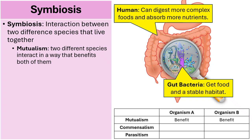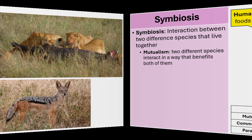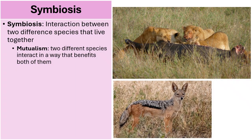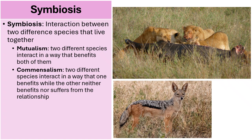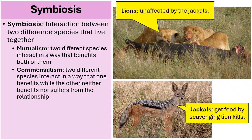Let's move on to commensalism. In commensalism, two different species interact in a way that one benefits while the other neither benefits nor suffers. A good example is jackals and lions: jackals get food by scavenging the kill that lions have consumed and left behind, staying a safe distance without threatening the lions. Once the lions move on and the jackals move in to scavenge, the lions are unaffected.